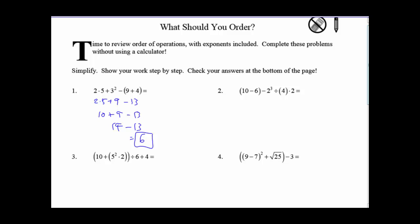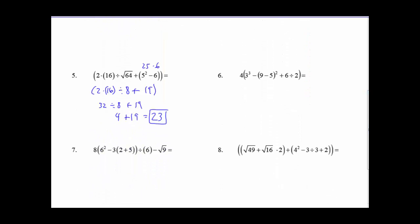Welcome back. Number 2, you should have gotten 0. Number 3 was 14. Number 4 was 6. Number 5 we already did. Number 6, you should have had 56. Number 7 was 17. And number 8 was 32.